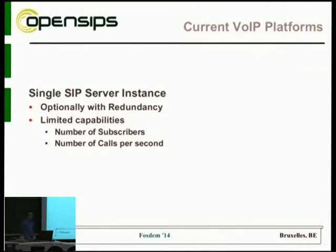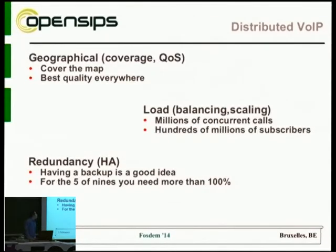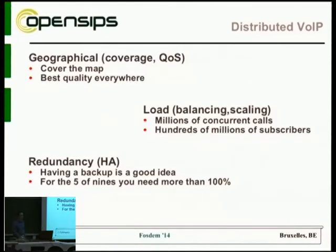Even if you're running some high-performance software like OpenSIPS, there are still reasons why you wouldn't want to put everything on a single box. First, you wouldn't like a single box for geographical reasons — your users are spread across the globe, not all from the same country, and you want to cover the entire map to provide better voice quality without streaming media from Europe to Asia.